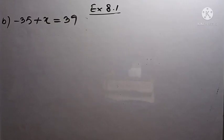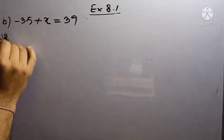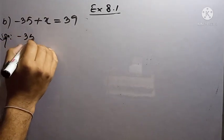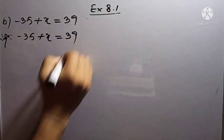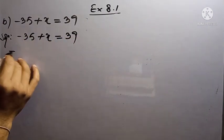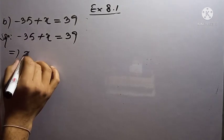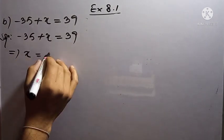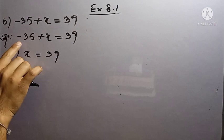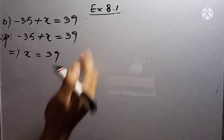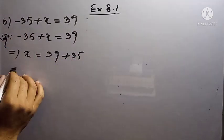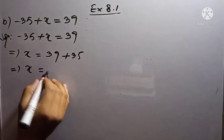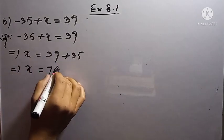Solution: minus 35 plus x equal to 39. In the next step, x equals 39. When minus 35 goes to the other side, it becomes plus 35. So x equals 39 plus 35, which gives us x equals 74.